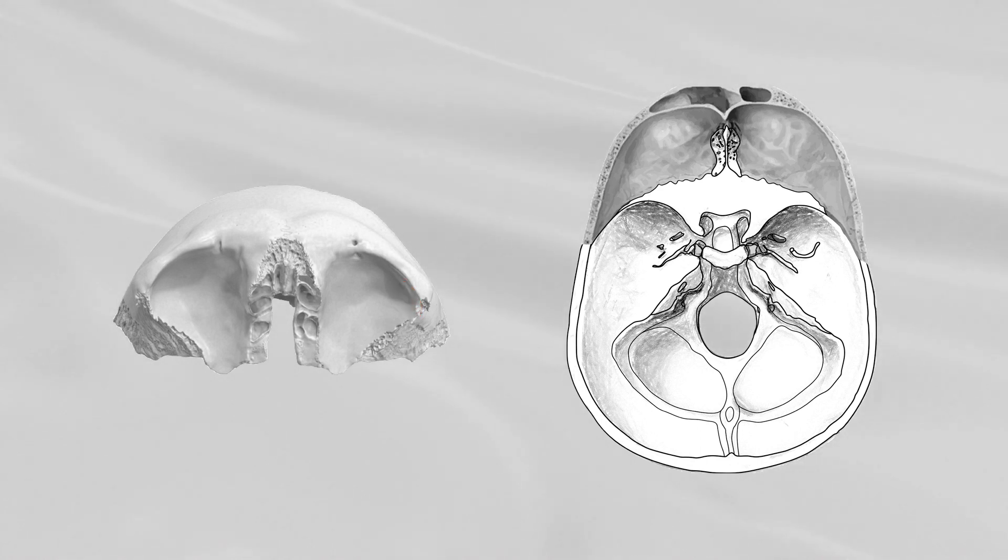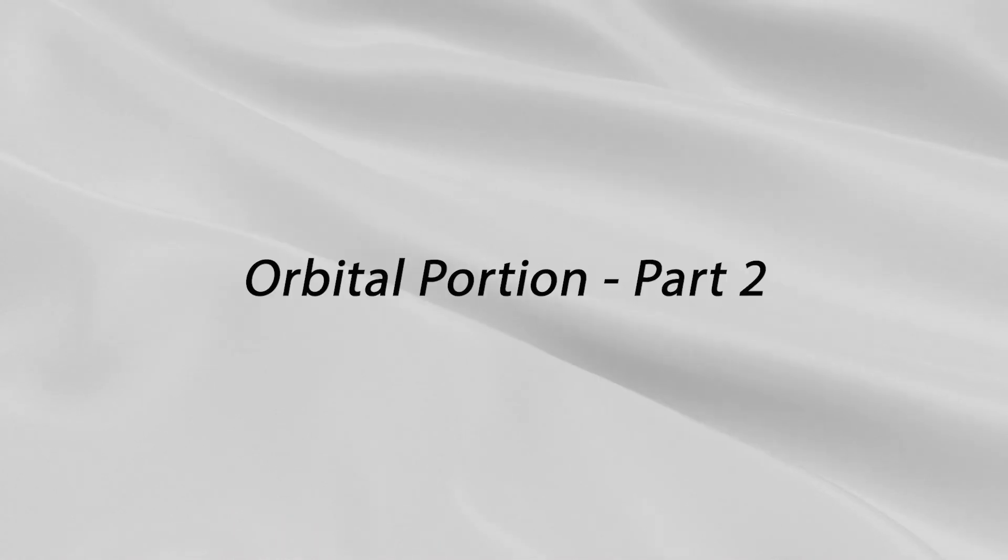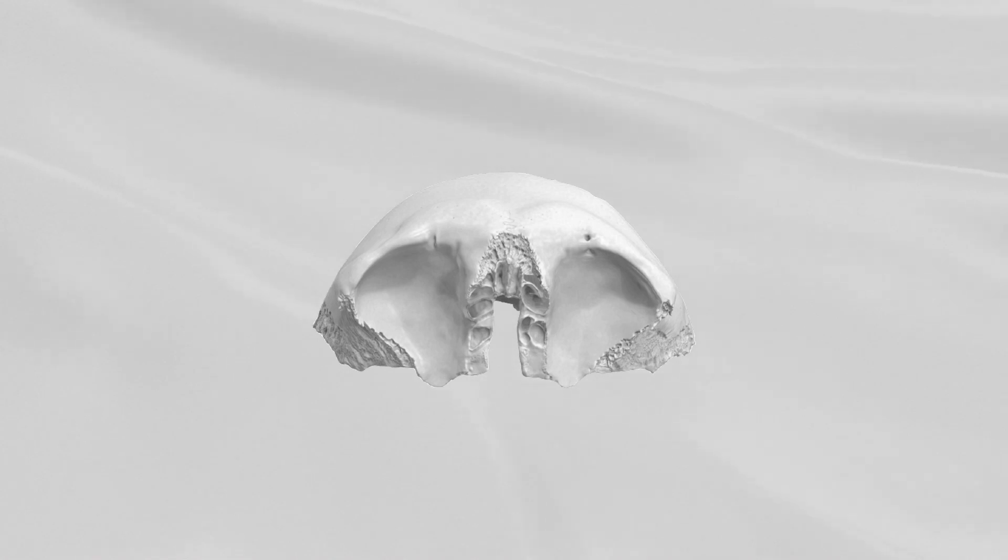The orbital plates are separated from one another by the ethmoidal notch. This notch is a median quadrilateral gap that is filled in the articulated skull by the cribriform plate of the ethmoid. The margins of the notch present several half-cells which, when united with corresponding half-cells on the upper surface of the ethmoid, complete the ethmoidal air cells. Two grooves cross these margins transversely.